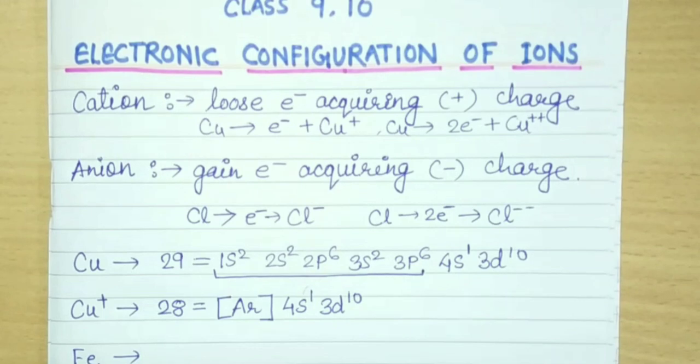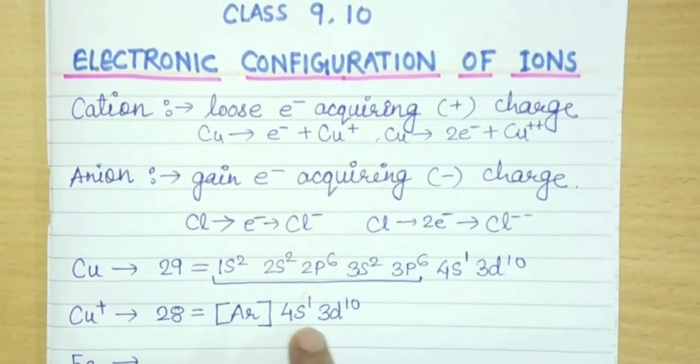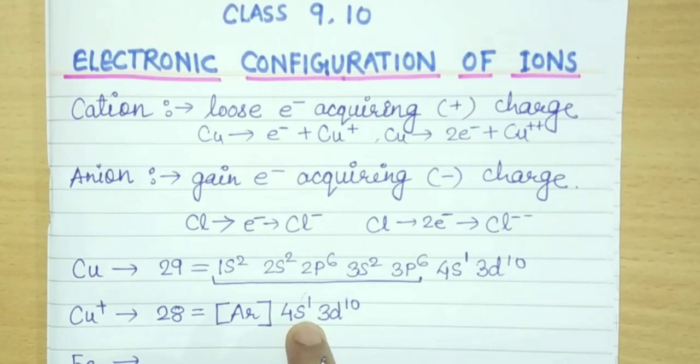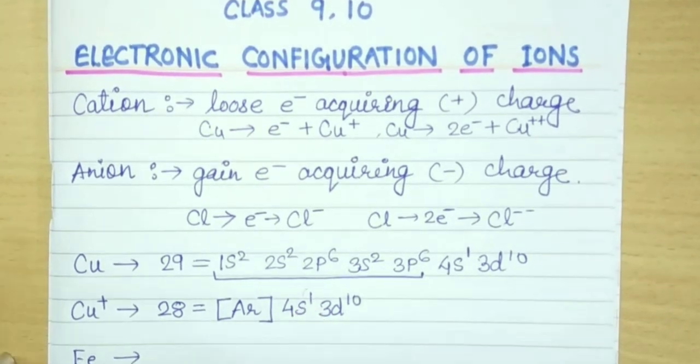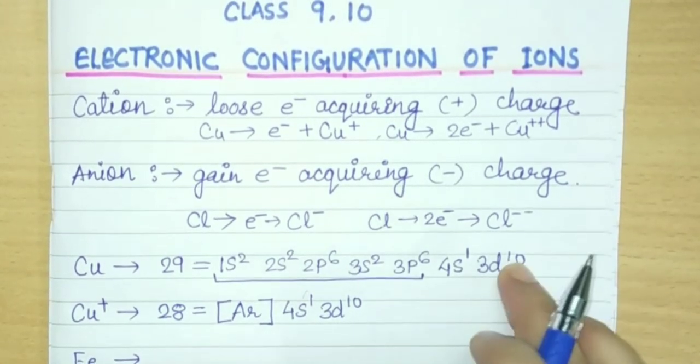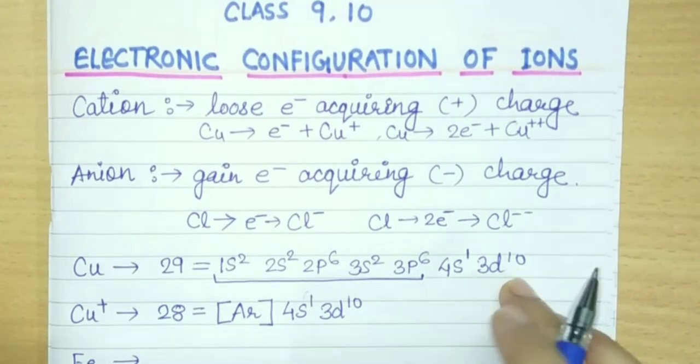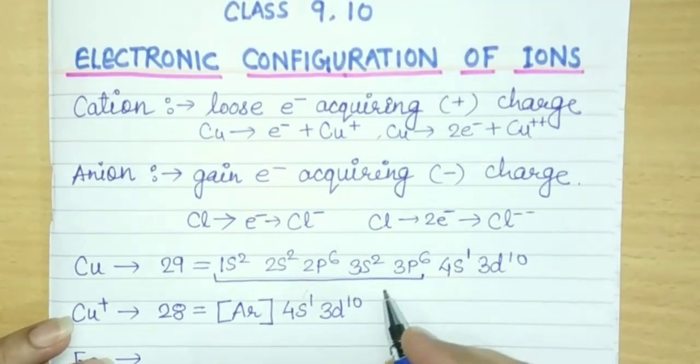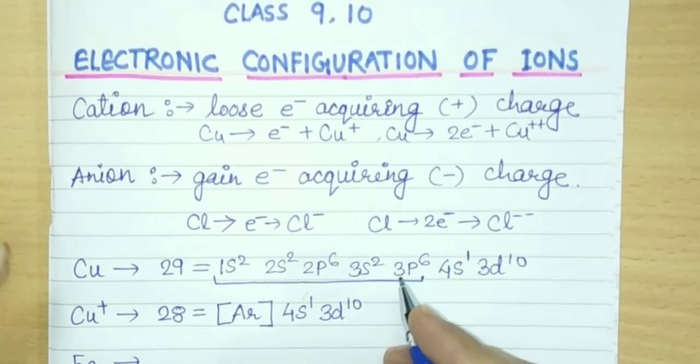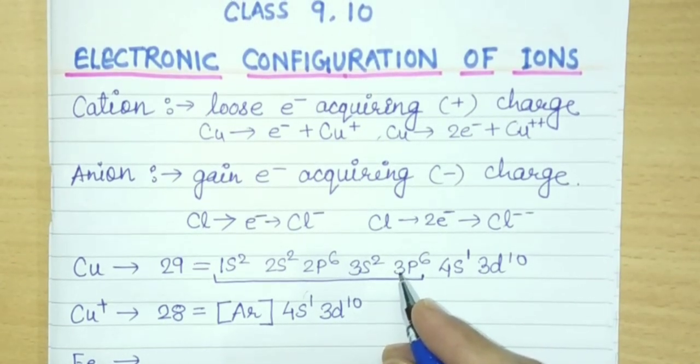Now we have to remove one electron from this. From which shell will we remove the electron? The outermost subshell. You know that s is the outermost subshell and that's why the electron will be removed from s first. But students think that since 3d10 is written last, one electron will be removed from 3d10, but that's wrong and their question becomes wrong. So we should not do it this way.